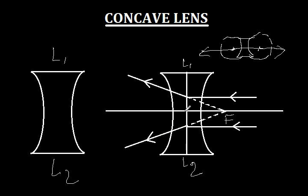The optical center of a concave lens is the point O, similar to that of a convex lens. A ray of light passing through the optical center O does not undergo any deviation. This concludes our lesson on the concave lens. Thank you.